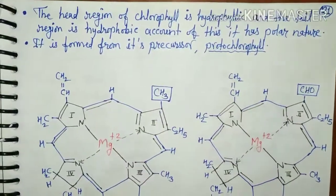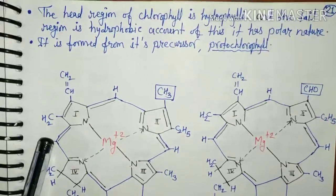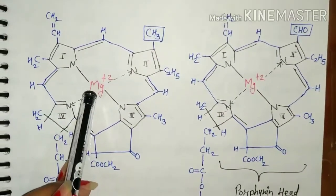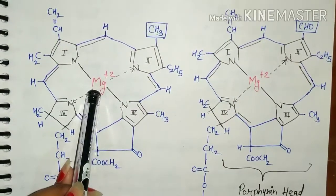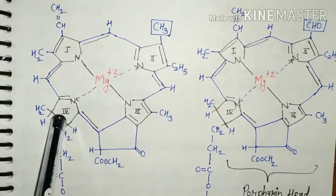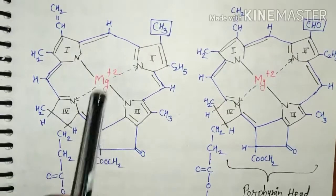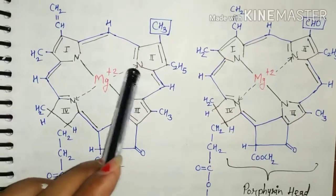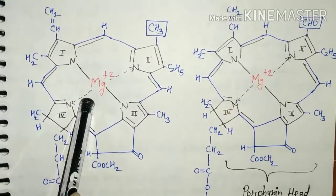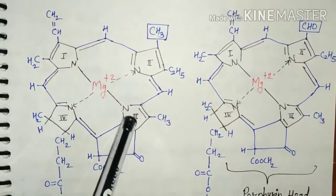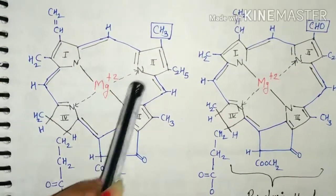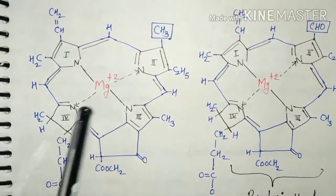In the structure of chlorophyll A and chlorophyll B, a magnesium element is found at the center surrounded by four pyrrole rings. These pyrrole rings are nitrogen-containing, so nitrogen and magnesium are essential elements for chlorophyll synthesis. The first and third rings bind with magnesium through covalent bonds, and the second and fourth rings bind through coordination bonds.